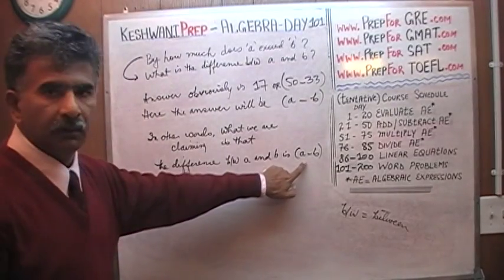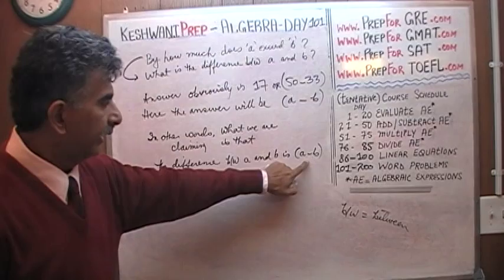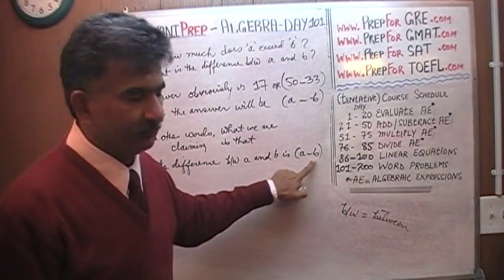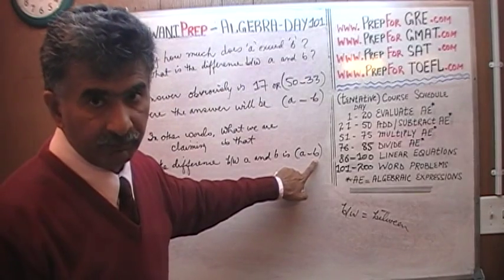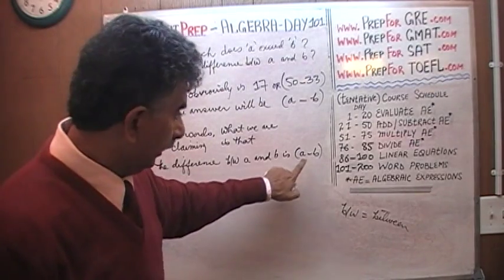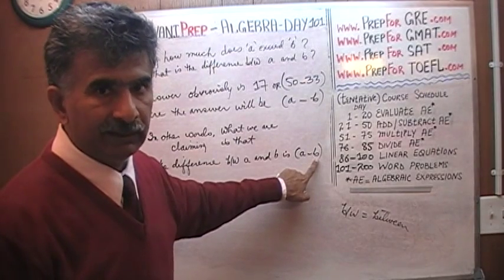A exceeds B by the amount of A minus B, whatever A is minus B, you take away B, that's how much A exceeds. How much does 100 exceed 70? Well, 100 exceeds 70 by 30. And how do we find that? 100 minus 70.